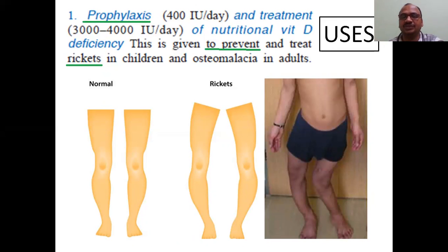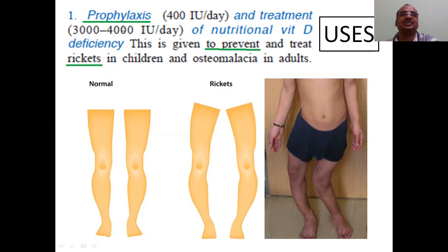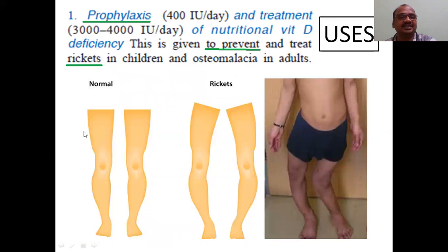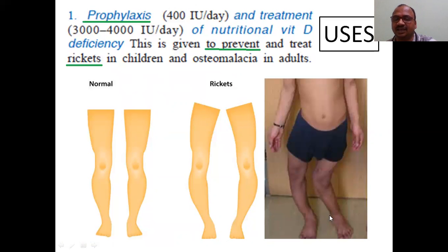Vitamin D is used for the treatment of various bone disorders. First is prophylaxis use — prophylaxis means prevention. It is used in the treatment of nutritional vitamin D deficiency to prevent and treat rickets. Rickets — the bones are somewhat bent due to deficiency of vitamin D. Small vitamin D deficiency leads to the biggest problems. First use is prophylaxis of rickets.